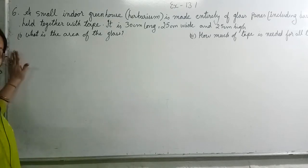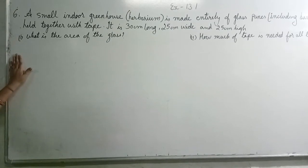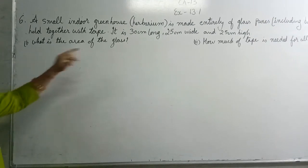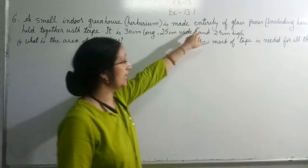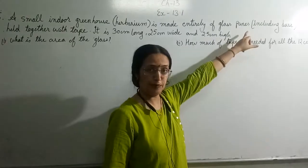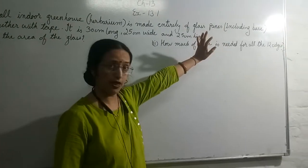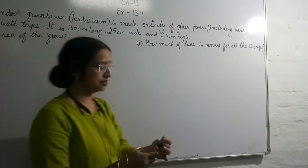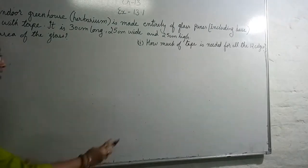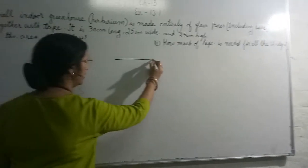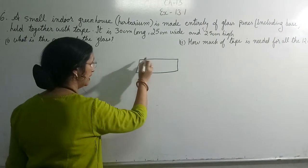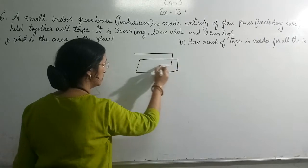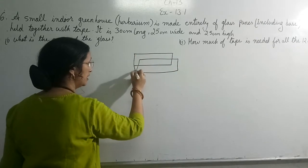Okay students, in question number 6 they are telling a small indoor greenhouse herbarium is made entirely of glass plate, including base. This means that in that herbarium which is made up of glass, the base is also of glass.